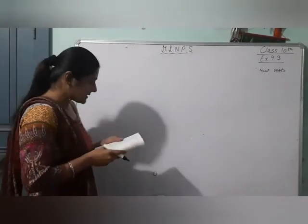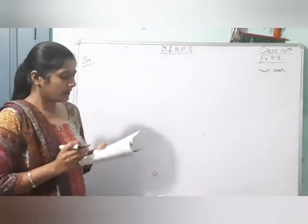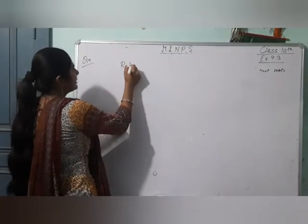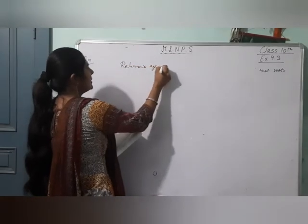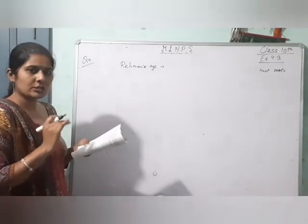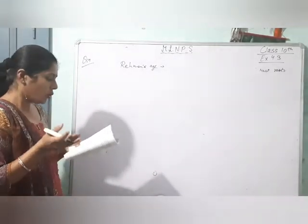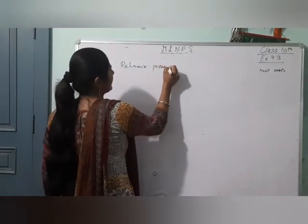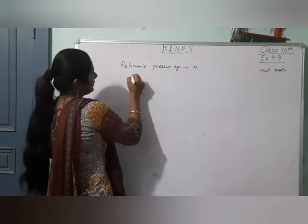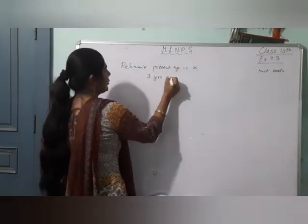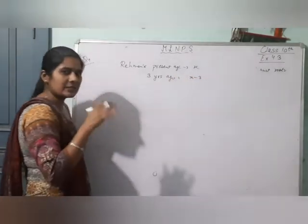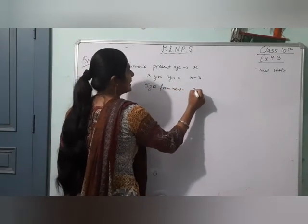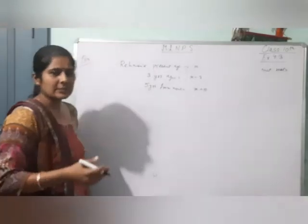Now moving on to question number 4. Question 4 is: the sum of the reciprocals of Rahman's age 3 years ago and 5 years from now is 1 by 3. Sabse pehle Rahman ki present age x lete hain. Rahman's age 3 years ago will be x minus 3, aur 5 years from now x plus 5 ho jayegi.